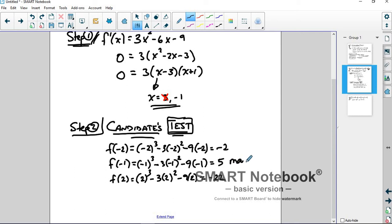So which is the largest of these three values? This is the maximum here. 5 is your maximum, it happens at -1. So (-1, 5) is your max. And -22 is the minimum. And so the point (2, -22) is your min. And that's the whole process.